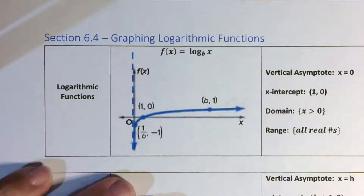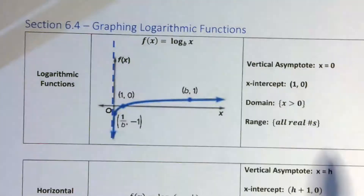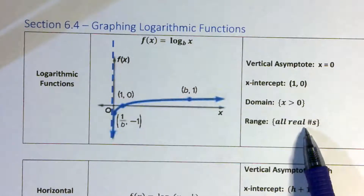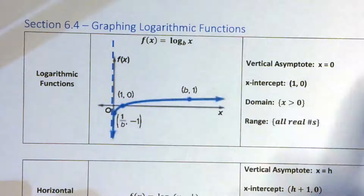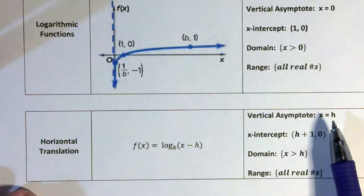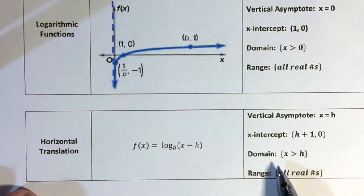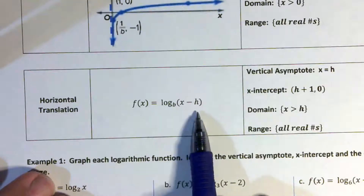This is graphing logarithmic functions. We have seen horizontal asymptotes — now we're going to have vertical asymptotes. We've had domains that were all real numbers and ranges that are restricted; now we have the reverse: vertical asymptotes and a restricted domain, while the range is all real numbers. The basic shape of a logarithmic function just goes up, and I'm going to ask you to identify the vertical asymptote, the x-intercept, the domain, and the range. The range is going to be the same answer every time.